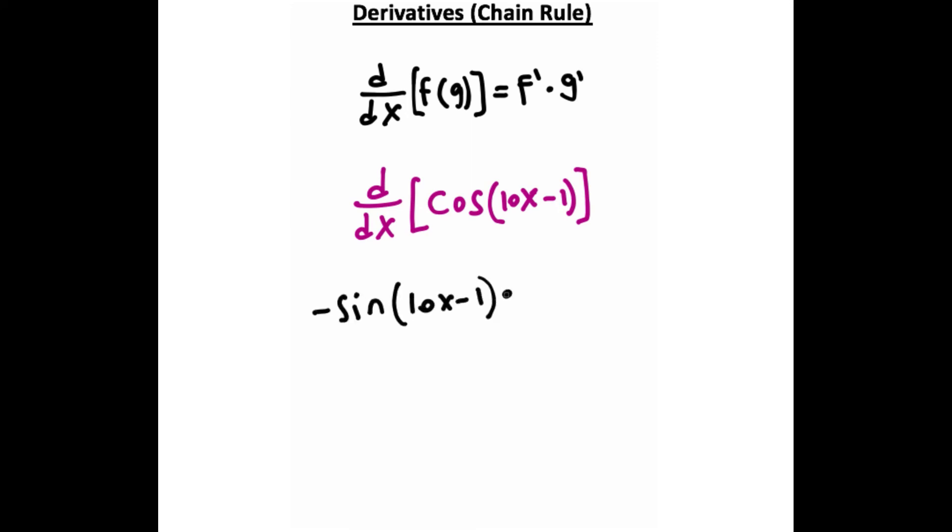Now what we want to do is multiply this by the derivative of the inside, and the derivative of 10x, that's just going to give you 10. And then whenever you take a derivative of a constant term like negative 1, that's just going to be 0. So this entire expression will disappear, so we'll just have to put a 10 on the outside here, because the derivative of this inside is 10, so we have the derivative of the outside times the derivative of the inside.